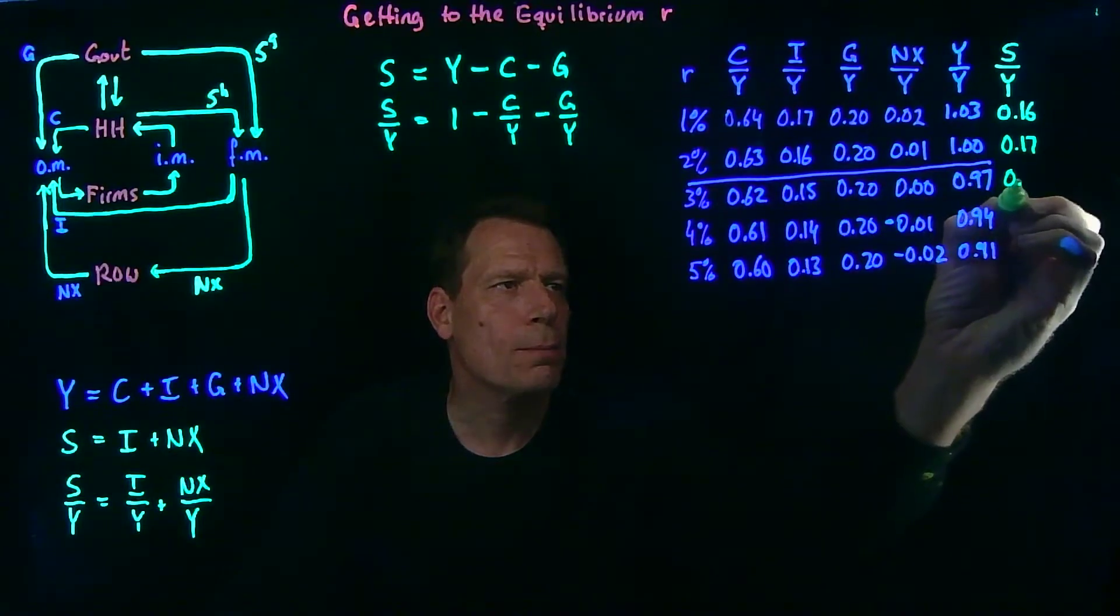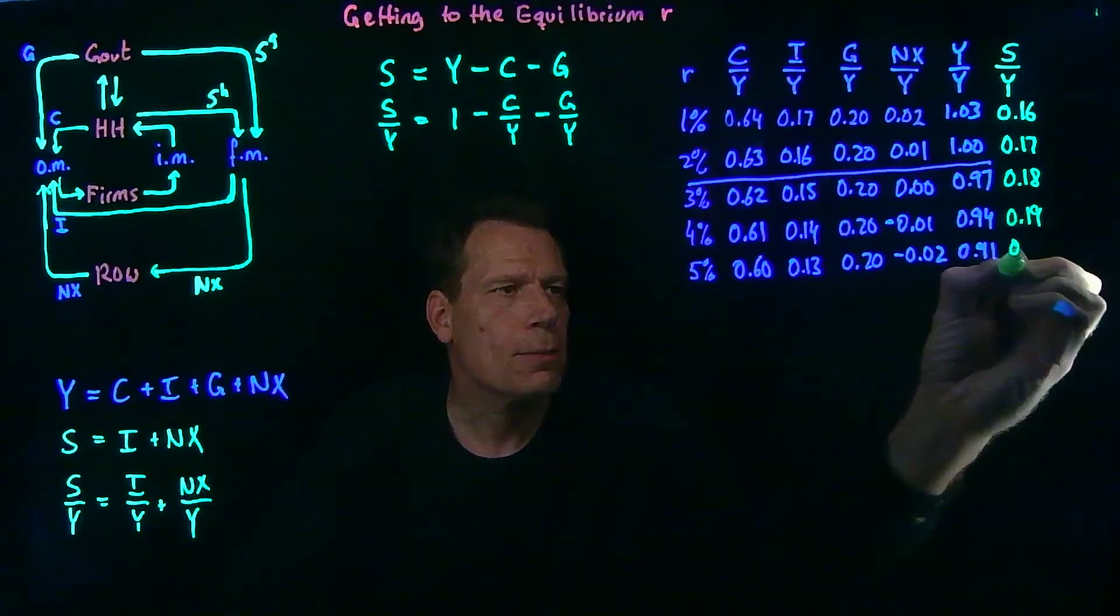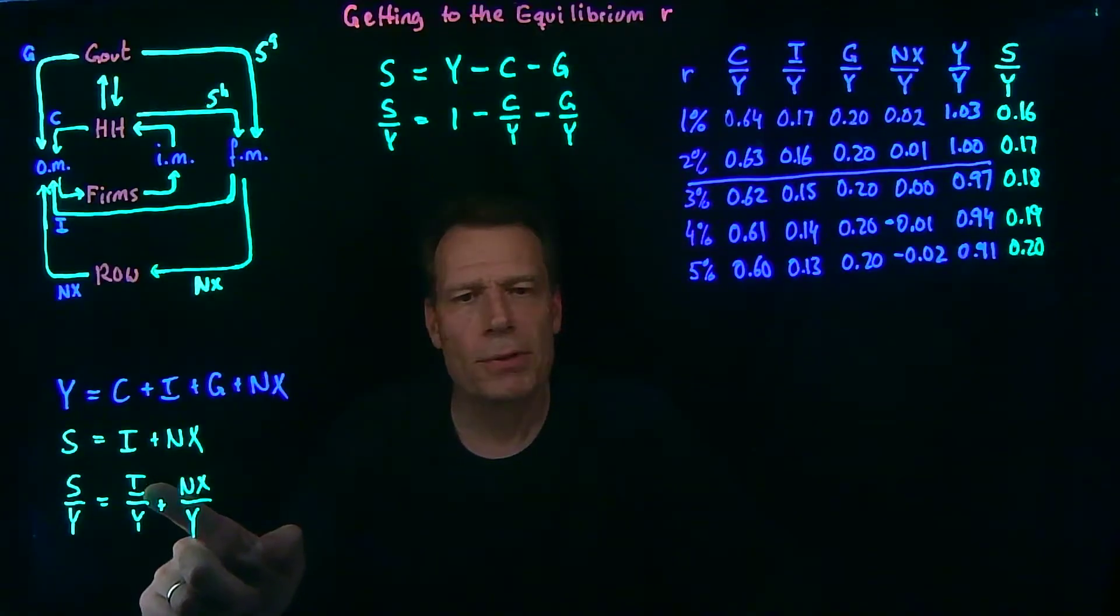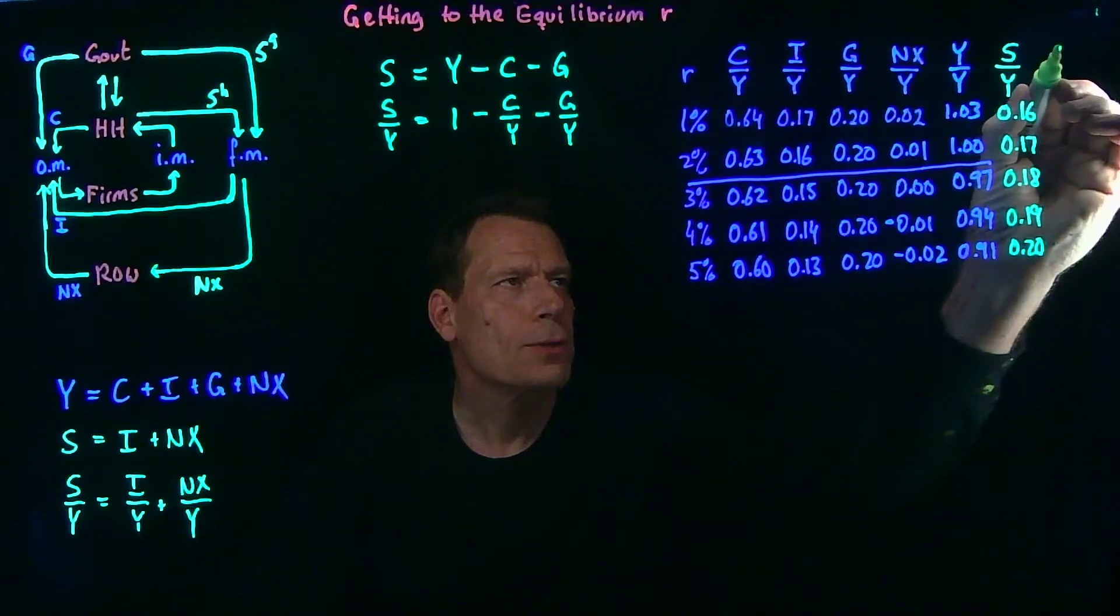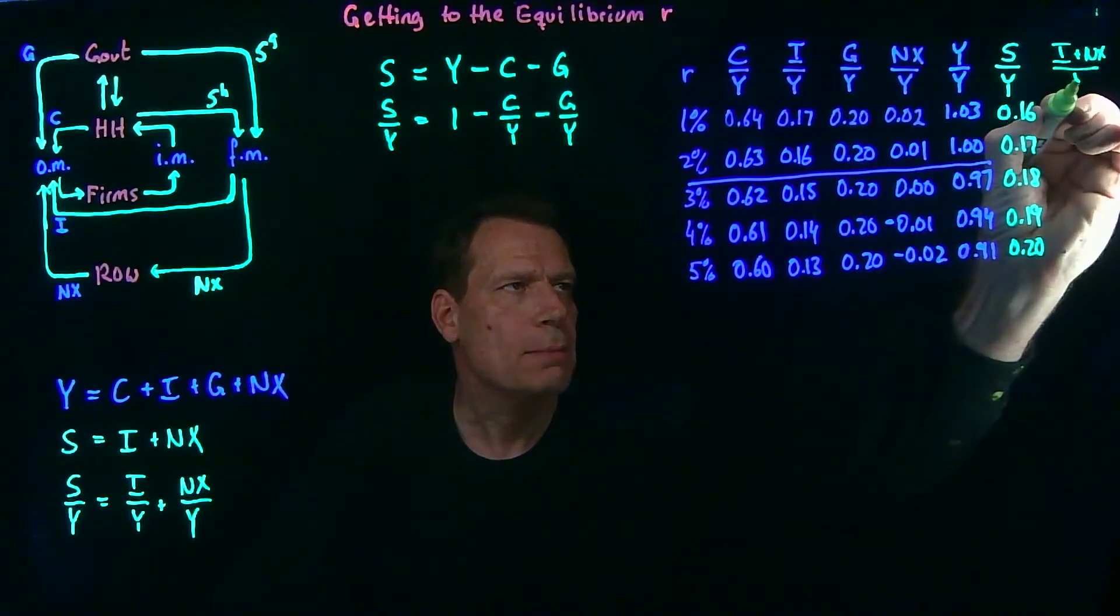And then we get 0.18, 0.19, and 0.2. Then we want a final column in the table. The column that represents investment plus net exports as a share of GDP.